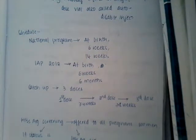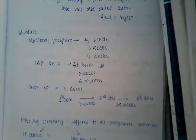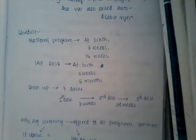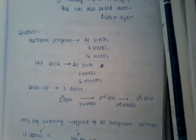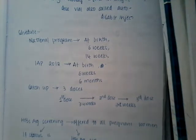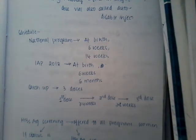Don't forget the national program schedule: given at birth, 6 weeks, and 14 weeks. This is about the Hepatitis B vaccination. Thank you for watching my lecture — if you have any doubts or feel something is inadequate, please comment in the comment section.